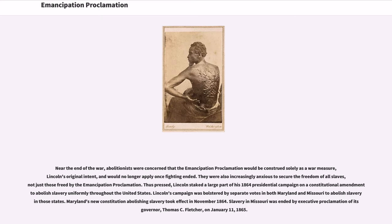Near the end of the war, abolitionists were concerned that the Emancipation Proclamation would be construed solely as a war measure, Lincoln's original intent, and would no longer apply once fighting ended. They were also increasingly anxious to secure the freedom of all slaves, not just those freed by the Emancipation Proclamation. Thus pressed, Lincoln staked a large part of his 1864 presidential campaign on a constitutional amendment to abolish slavery uniformly throughout the United States.